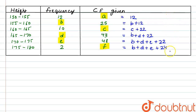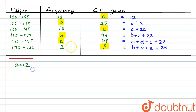Now if we simplify these equations, we will get the values for our unknown entries. From the first equation, A is equal to 12. In the next equation, B plus 12 is equal to 25, so B is equal to 25 minus 12, which is 13.